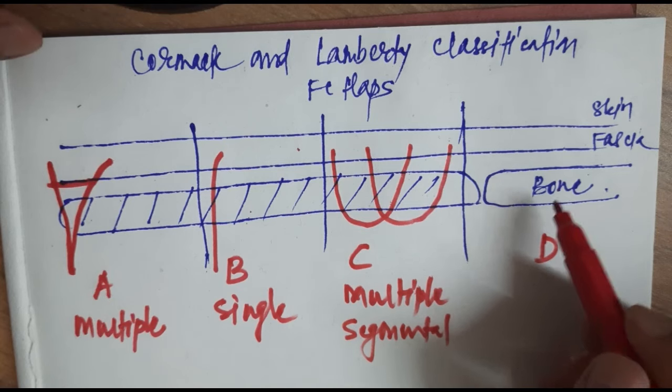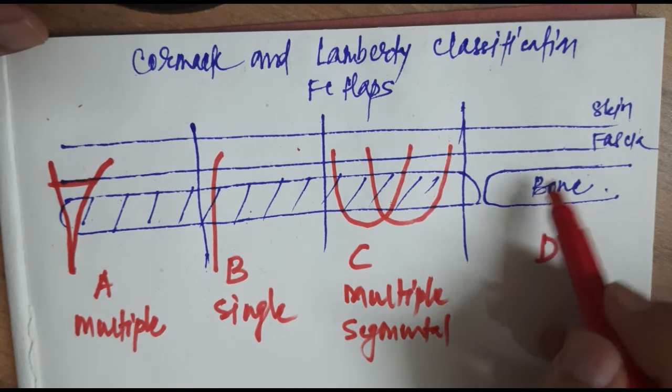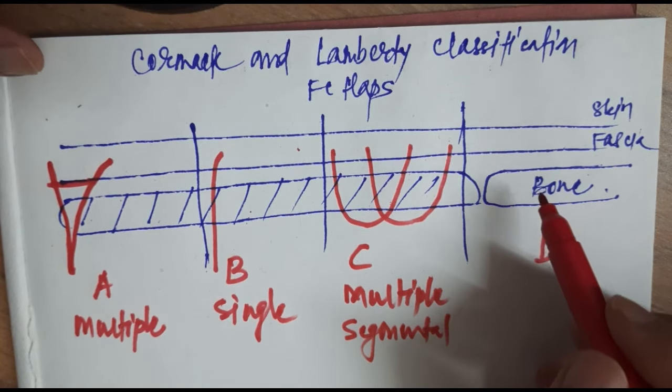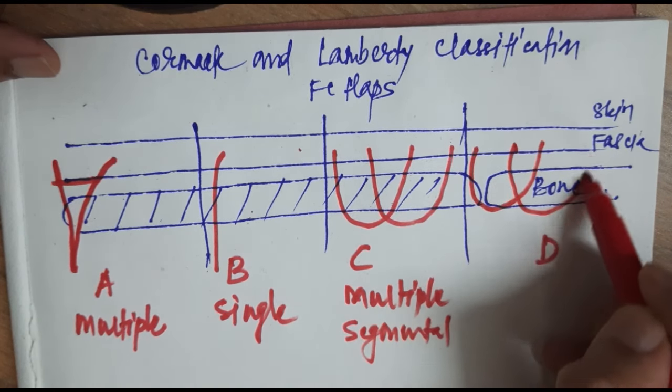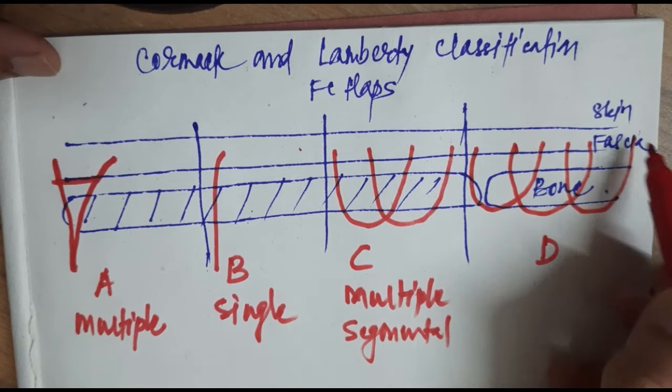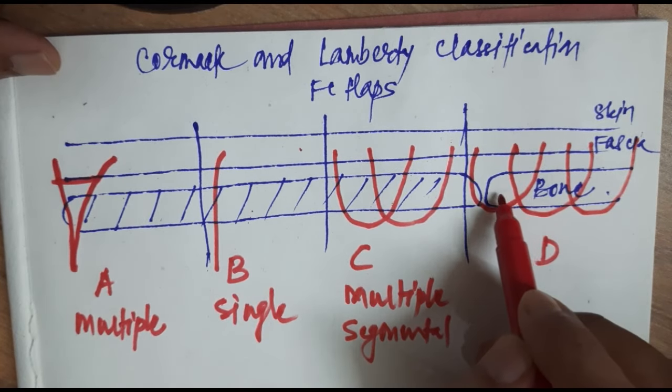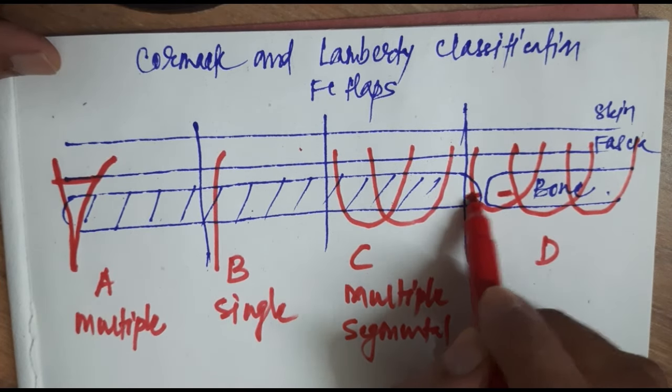Type D is like type C but it has got osteomyocutaneous perforators. These are going through the bone and through the muscle.